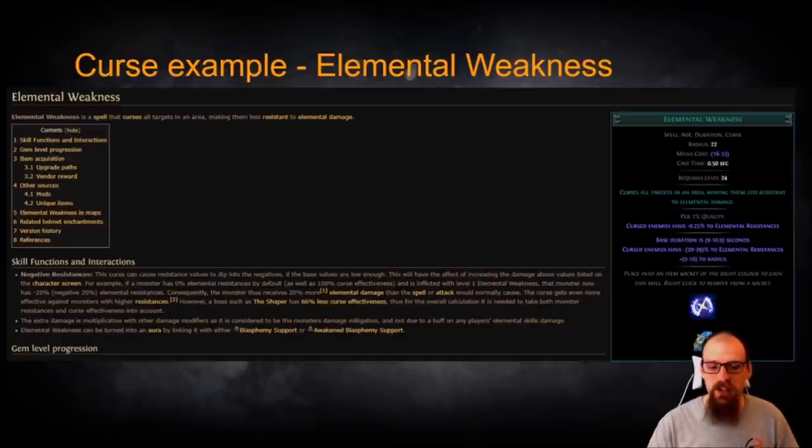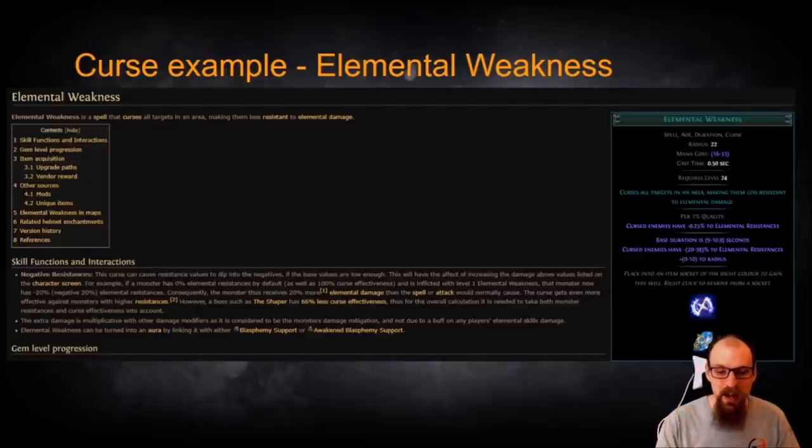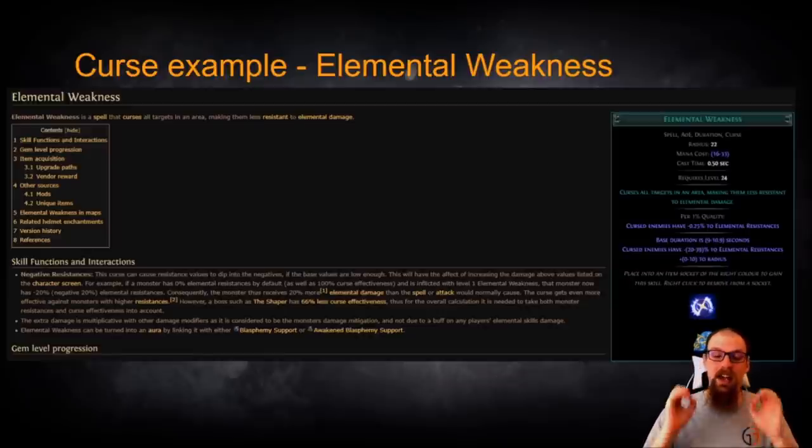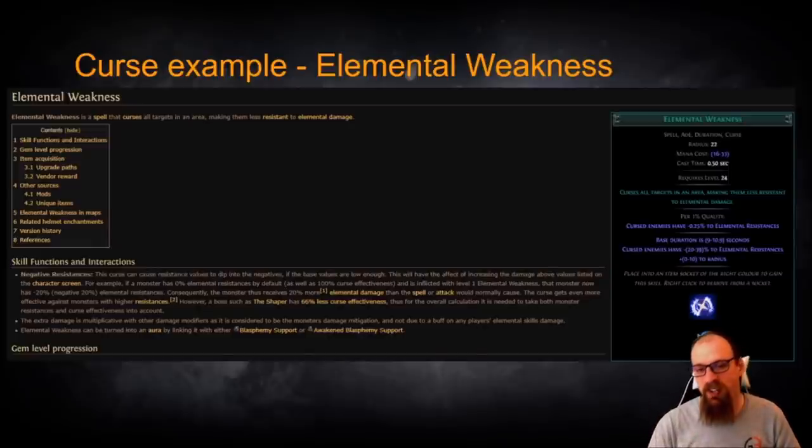The extra damage that is then dealt is multiplicative with other damage modifiers as it is considered to be the monster's damage mitigation and not due to a buff on the player's Elemental Skills damage. So in other words, Elemental Weakness in and of itself can act as a massive more multiplier if you're able to actually push monster's Elemental Resistances into the negative which by boosting your curse effectiveness is something that we are now able to achieve quite easily for many monsters.